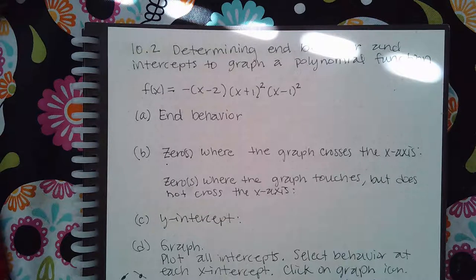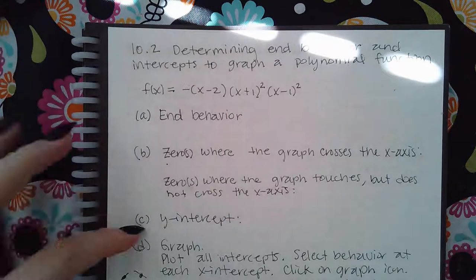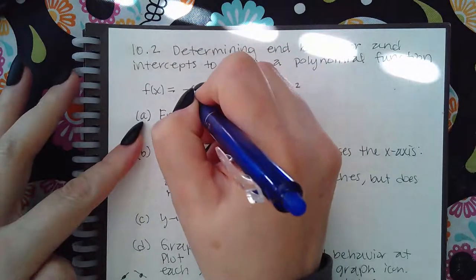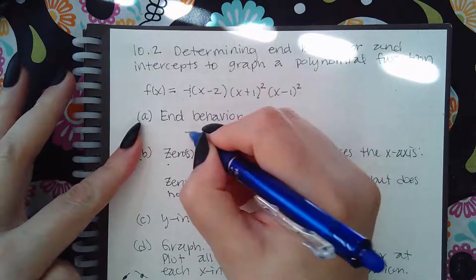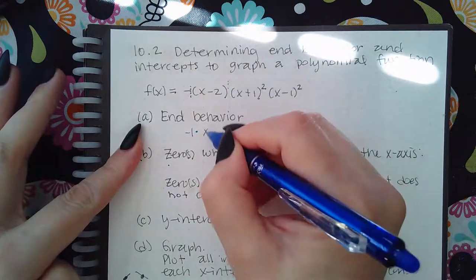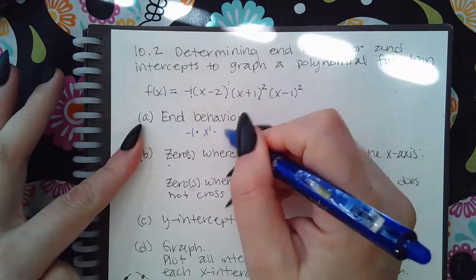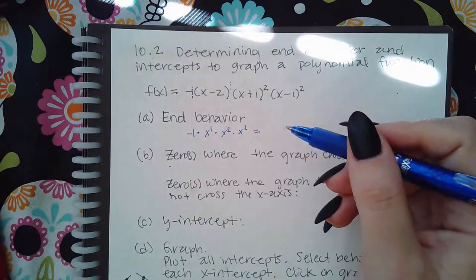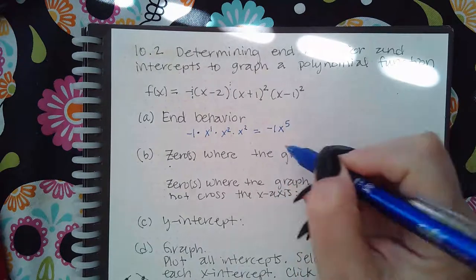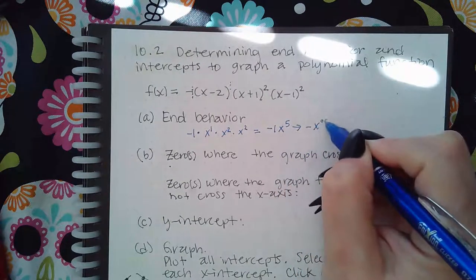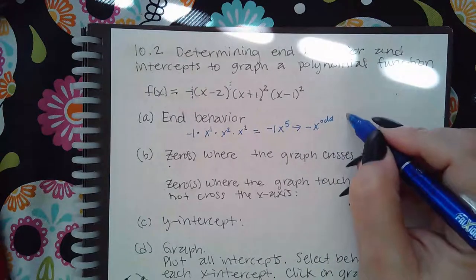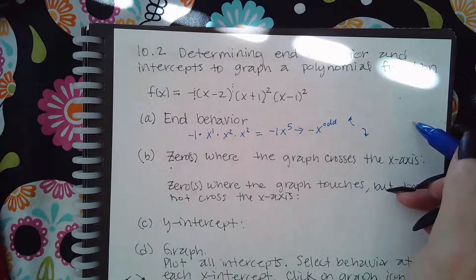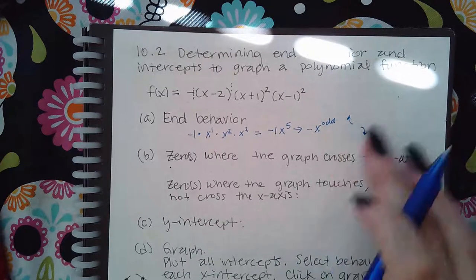For this one, there are really four things we're going to be doing to graph this. The first thing is determining the end behavior. I have a negative one in front, and I multiply it by x to the power one, then by x to the power two, and by x to the power two. This gives me the leading term: negative x to the fifth, which is a negative x to the odd type, meaning it will have that particular end behavior.